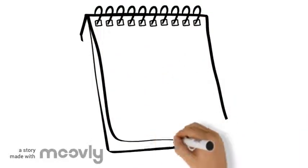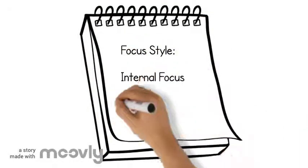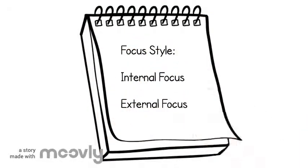Before creating your timeline there are two elements you need to know about. The first is a focus style. An internal focus style is when a person or athlete likes to have no distractions and only focus on the competition and race. This would mean that a person with an internal focus style would like blocking out any distractions during a competition so that they can solely focus on themselves.